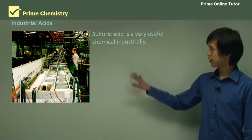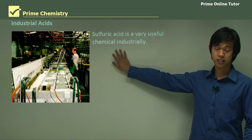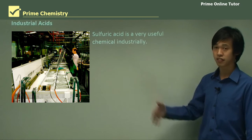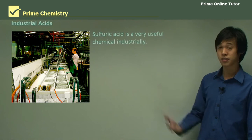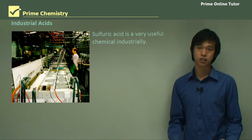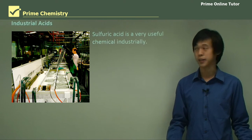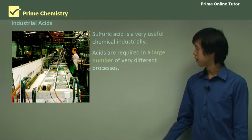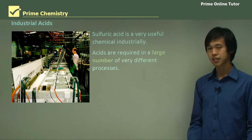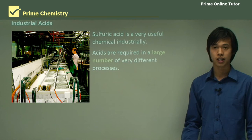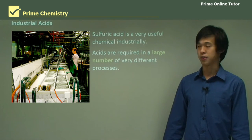In your studies of HSC chemistry you've already seen a lot of the uses of sulfuric acid, so the statement that it's very useful in the chemical industry shouldn't be a surprise, because you've seen it used in previous topics. Acids in general are required in a large number of different chemical processes for various industrial chemicals.